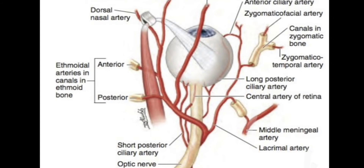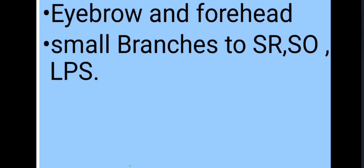The supraorbital artery runs at the medial border of the superior rectus and the levator palpebrae superioris muscle. It leaves the orbit through the supraorbital foramen and supplies the eyebrow and the forehead. Small branches are also given to the superior rectus, superior oblique, and the levator palpebrae superioris muscle.